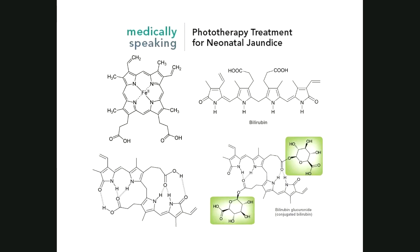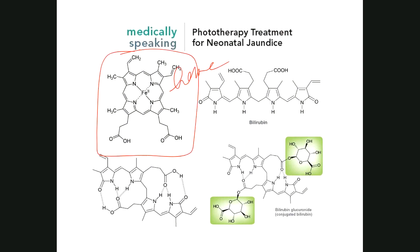There's an interesting application of these concepts that many of you in the nursing program are going to encounter if you rotate through the neonatal intensive care unit. The structure on the top left is heme. As your red blood cells are being destroyed about every 120 days, the heme needs to be disposed of. The heme structure will ultimately be broken down into one of several compounds, but the most notorious and important is this compound called bilirubin.